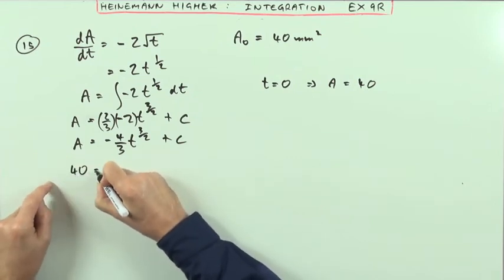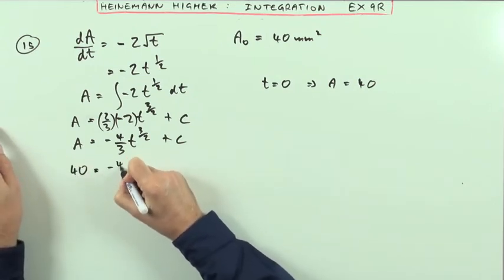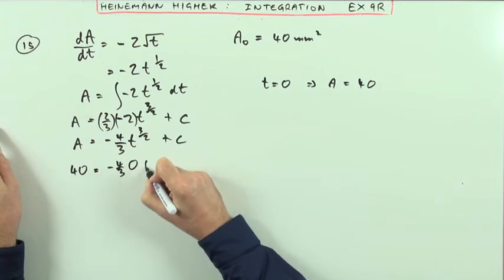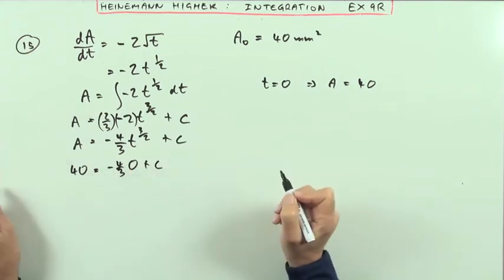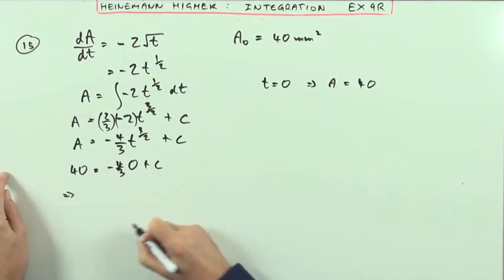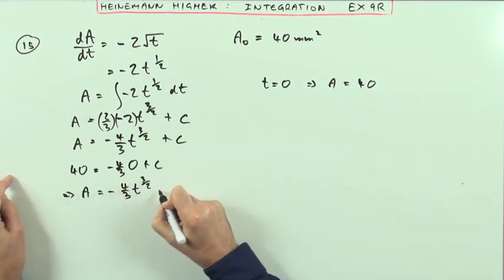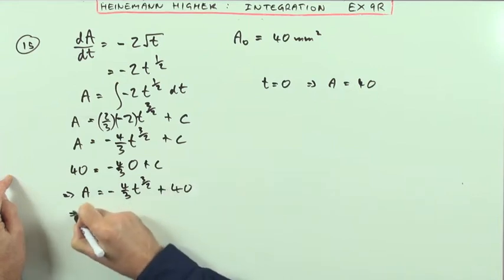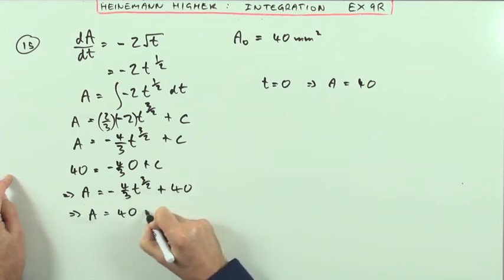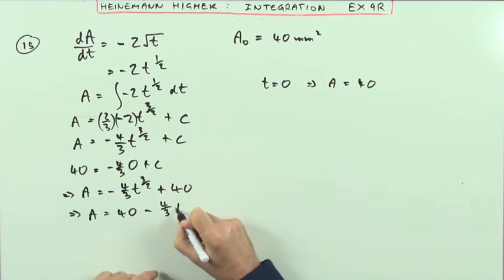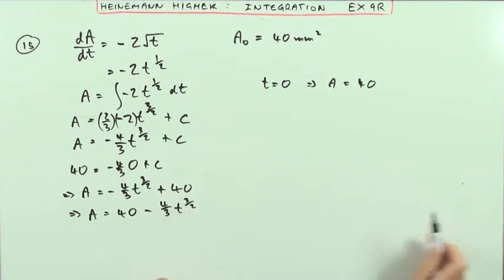A will be 40 when t is 0. So that's -4/3, and that just comes to 0 + C, which means C is 40. So that means A is going to be -4/3 t^(3/2) + 40, or we need the form 40 - 4/3 t^(3/2).